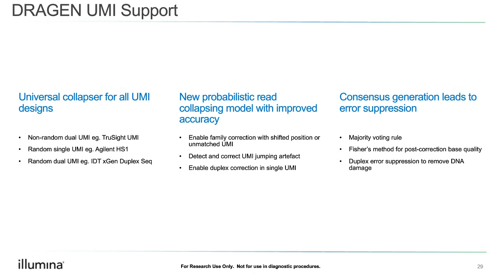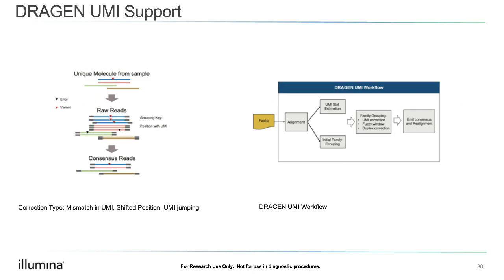The workflow to generate a read-collapsed BAM does two steps of alignment: first alignment, family grouping, UMI estimation, consensus generation, UMI correction, duplex correction, and then realignment to give you a read-collapsed BAM. This workflow existed in the previous version, but now you can bring in any other UMI types with an improved error correction model built in. The runtime for simplex UMI is between 3 to 25 minutes, and for duplex between 10 and 25 minutes — much faster than other widely used tools.